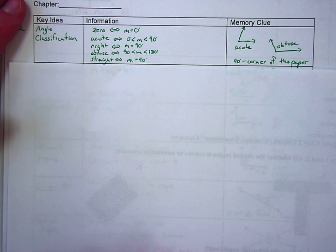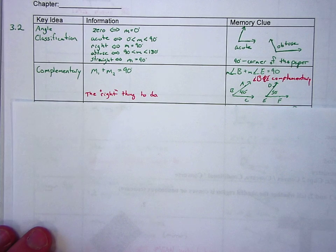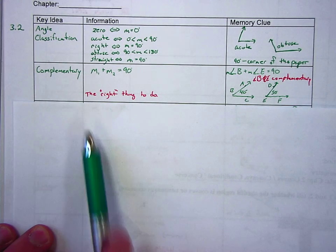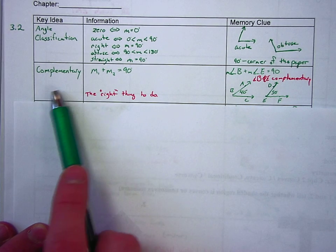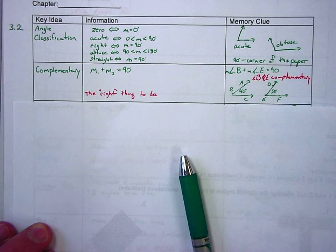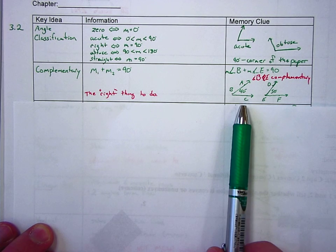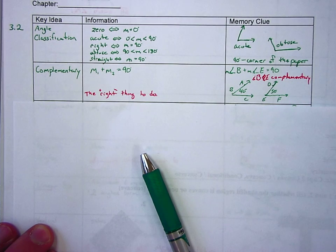Next vocab word is complementary. Mrs. Baranowski had a clever idea. She said this is the right thing to do because people get complementary and supplementary confused. So a complementary angle, angles are actually where you have two different angles. When you add them up, you get 90 degrees. They can be adjacent, they can be touching, or they can be completely separate. So here you would say angle A and angle B and angle E are complementary angles because 40 plus 50 is 90 degrees.